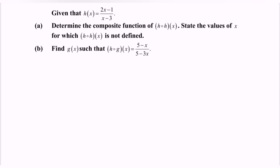Hi everyone, welcome to my channel. In this video I'm going to discuss an example for functions and graphs. Given that h(x) equals 2x minus 1 over x minus 3, part (a): determine the composite function h∘h, then state the value of x for which h∘h is not defined. Part (b): find the function g(x) such that h∘g equals (5 minus x) over (5 minus 3x).